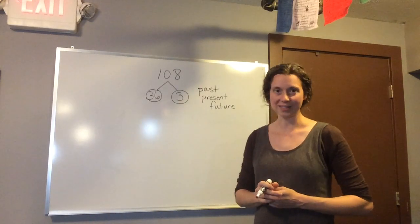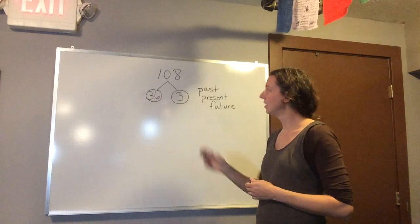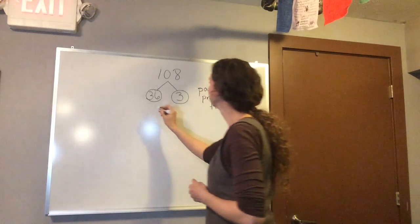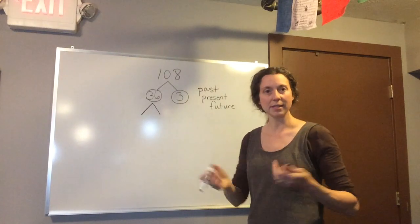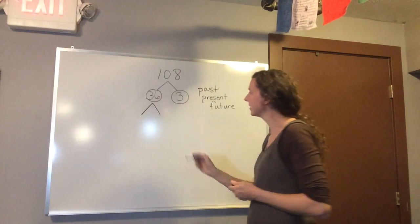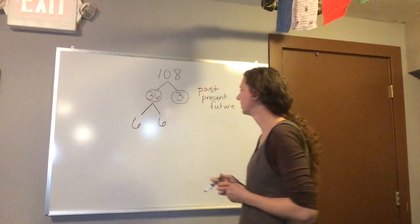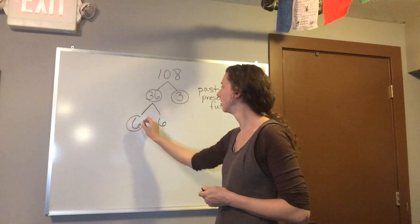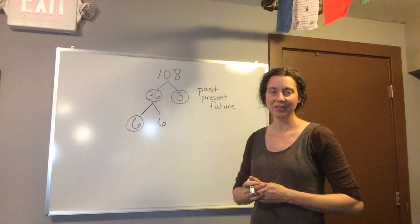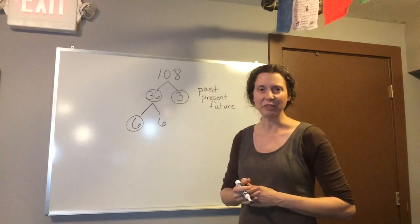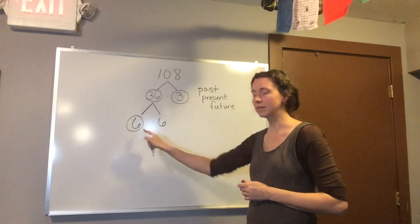Now what about the 36? Well, if we continue to use our factor tree, we can break that down even more. 6 times 6 equals 36. Now normally, I would break this 6 down into prime numbers, go even further. But I'm going to stop there, because this 6 is very important.